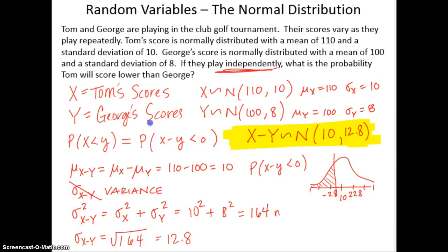So we're going to normal CDF. Lower bound is negative infinity. Upper bound 0. Mean 10. Standard deviation 12.8. Type that in your calculator and you should get 0.217.